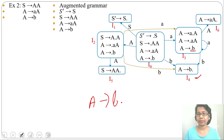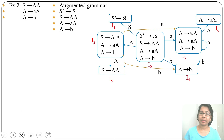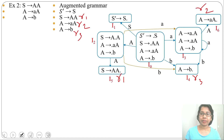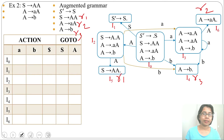I4 is a reduction so there will be no transition. I5 is also a reduction so there will be no transition. I6 is also a reduction so there will be no transition. We now assign reduction numbers: I5 is reduction 1, I6 is reduction 2, I4 is reduction 3. The LR automation is now constructed.